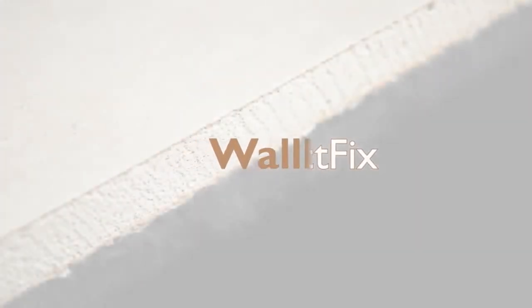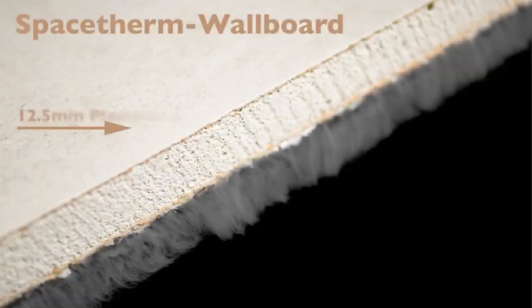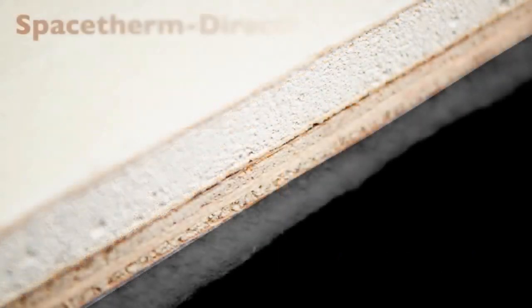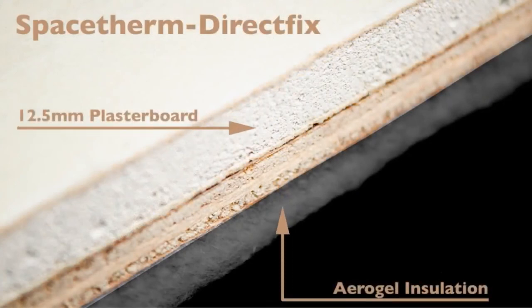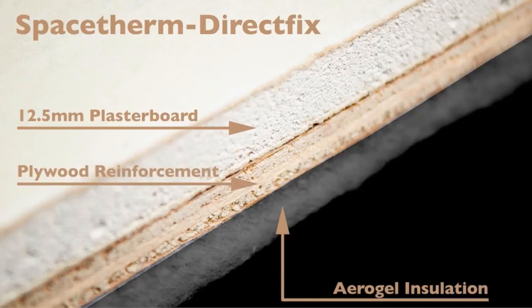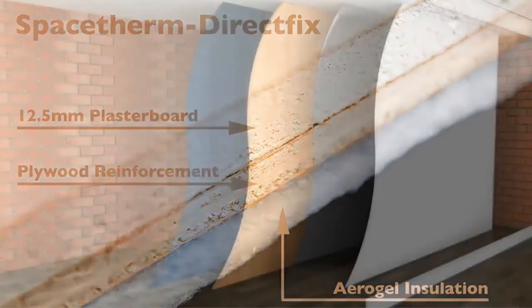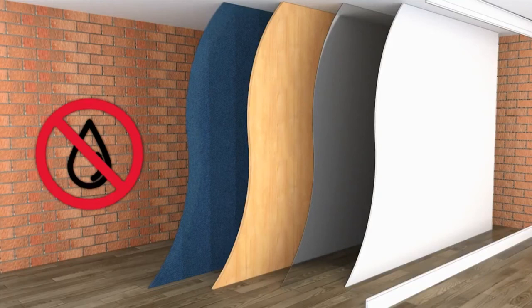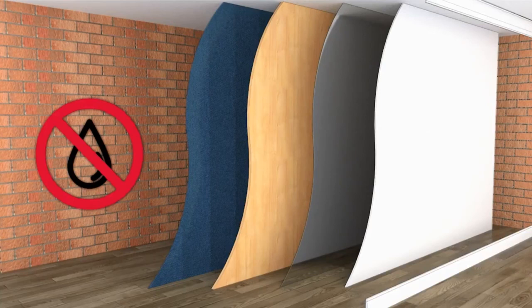Where a more traditional finish is required, SpaceTherm wall board offers a plasterboard finish with the same aerogel insulation as the multi boards. This is fixed onto timber straps or stud work in the same manner as a traditional insulated plasterboard, but offers significantly better performance. For applications where space is even more constricted, SpaceTherm Direct Fix can be used to omit the requirements for timber strapping and its associated depth. This board incorporates an additional layer of plywood to facilitate the use of short-fired fixings into masonry substrates. The hydrophobic nature of SpaceTherm Aerogel insulation blankets means no additional protection is required on damp walls, making SpaceTherm Direct Fix a one-step solution to thermal upgrades on walls with moisture issues.